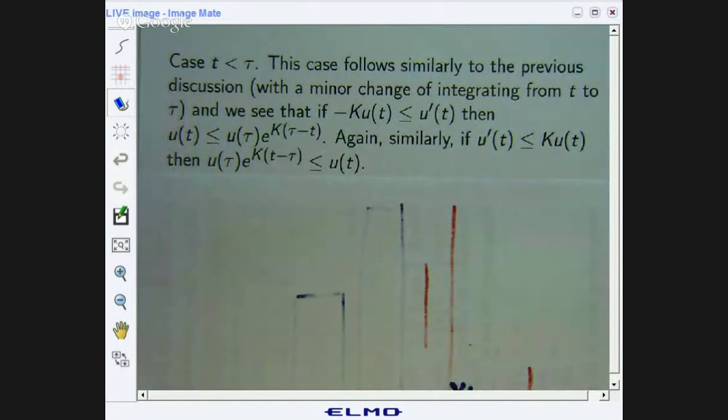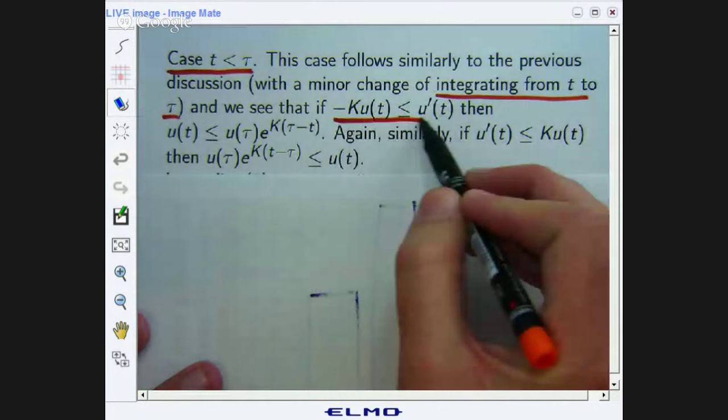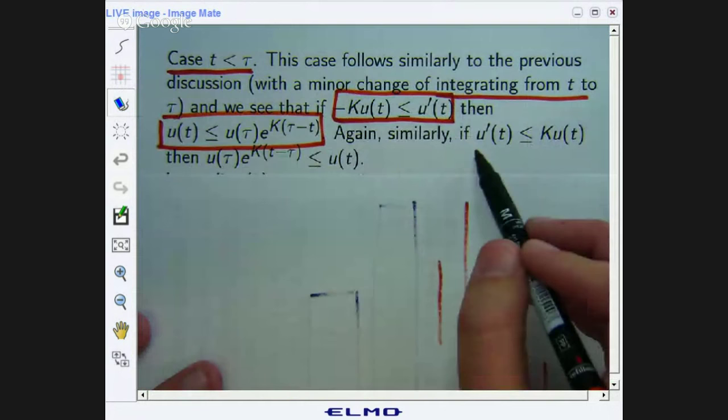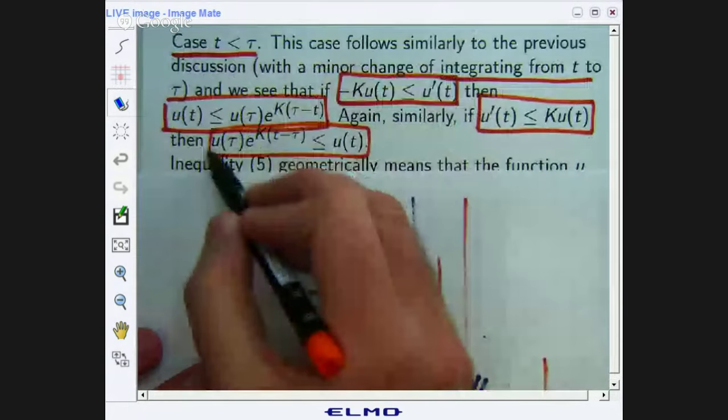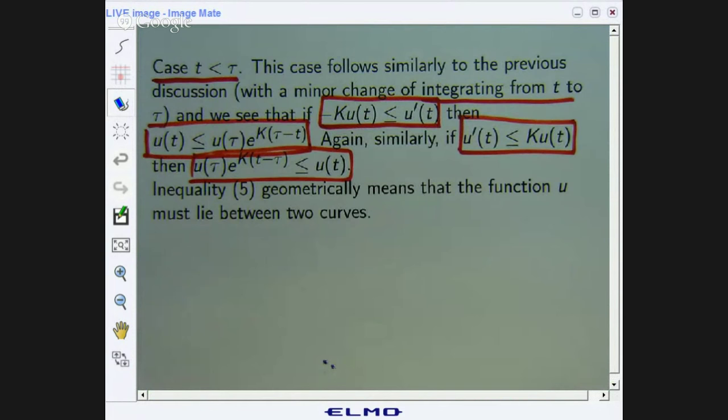What about the other case? Well, very similar. I'll skip over that pretty quickly. When t is less than or equal to τ, you just follow the same arguments as in the previous page. The only difference is you don't integrate from τ to t, you integrate from t to τ. So just to summarize, from this differential inequality, you come up with this. And from this differential inequality, you come up with this. So I won't skip over that because essentially you're just repeating the argument.